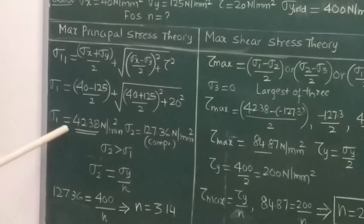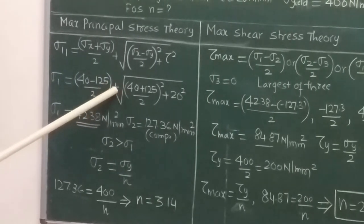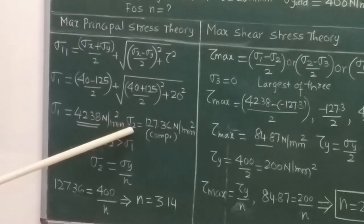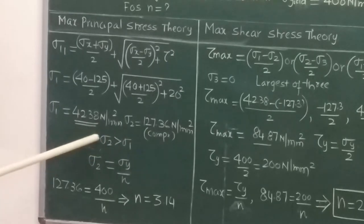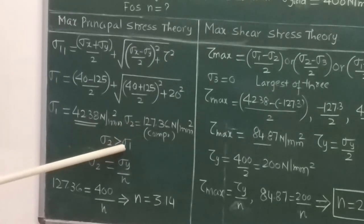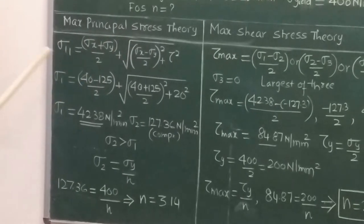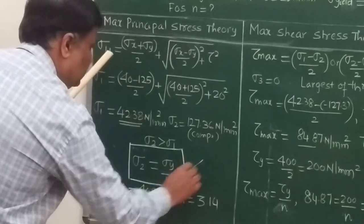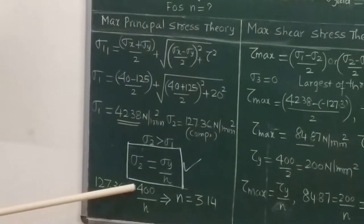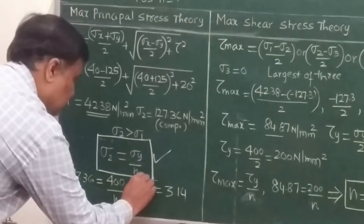By solving this we get the maximum principal stress as 42.38 N/mm². Similarly, by using the negative sign we find the minimum principal stress as 127.36 N/mm², which is compressive in nature. This clearly indicates that σ₂ is greater than σ₁. Taking this stress value for comparison with yield stress, the condition for failure according to maximum principal stress theory is when the maximum principal stress reaches the yield stress divided by factor of safety. Substituting 127.36 and yield stress 400 N/mm², we get a factor of safety of 3.14.